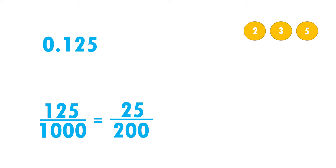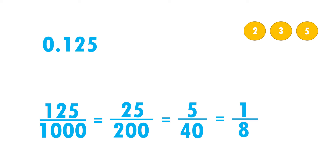Both numbers can be divided again by 5: 25 divided by 5 gives me 5, and 200 divided by 5 gives me 40. They can still be divided again by 5: 5 divided by 5 gives me 1, and 40 divided by 5 gives me 8. Therefore 0.125 is equal to 1/8, along with its equivalent fractions.